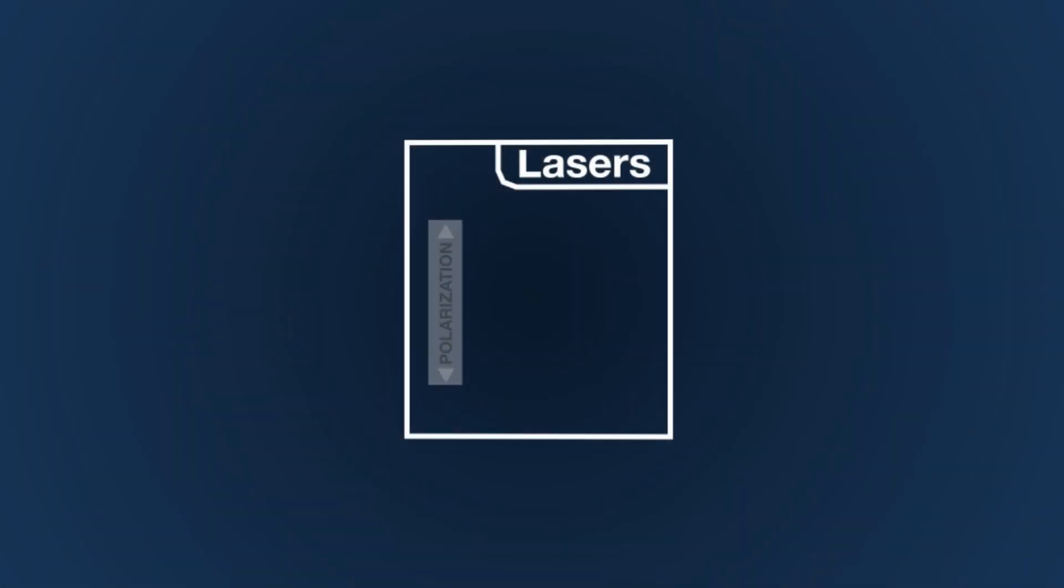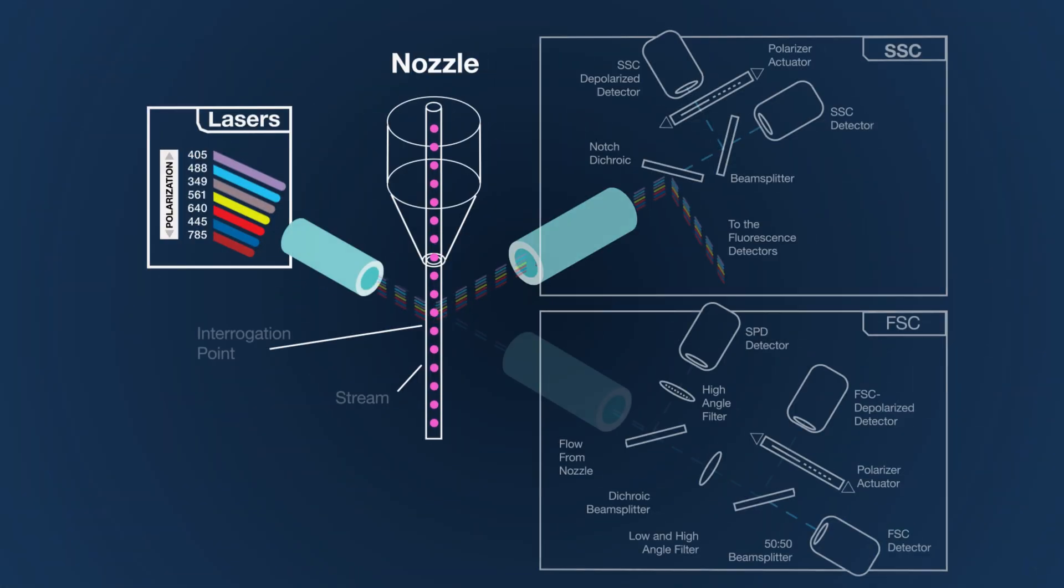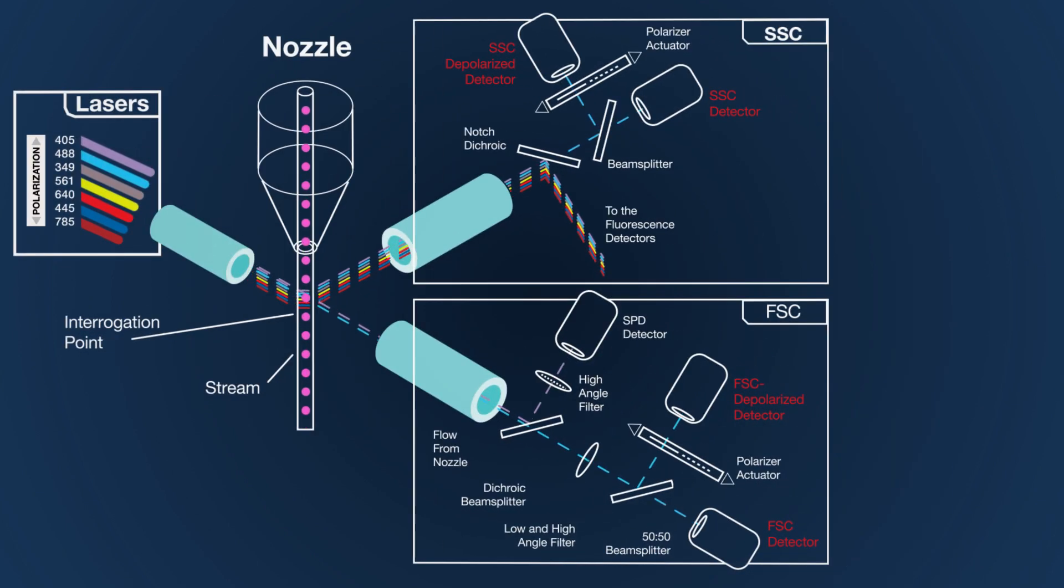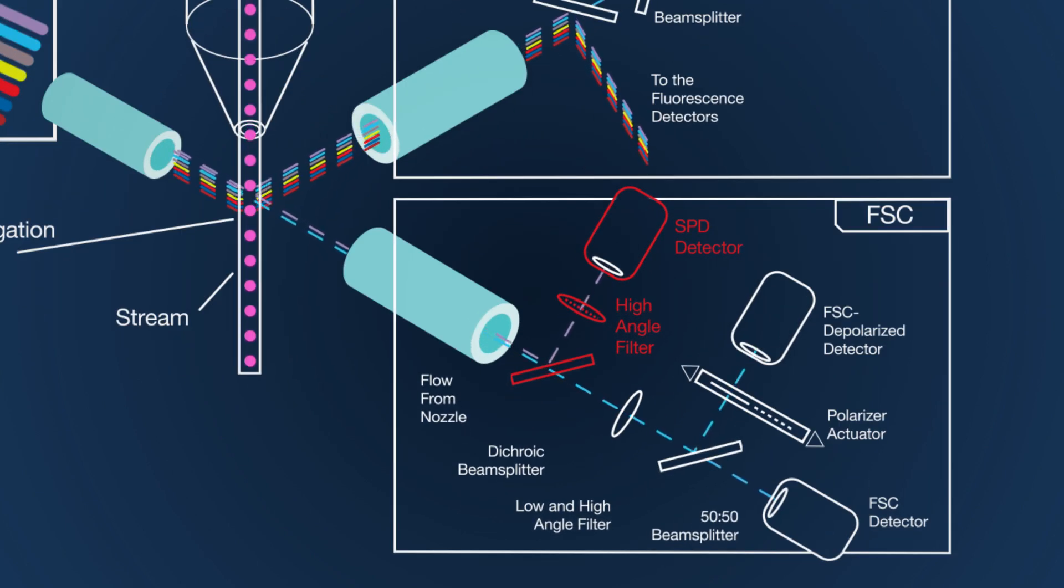Multiple scatter options offer greater flexibility with 488 nanometer forward scatter and side scatter, polarized 488 nanometer forward scatter and side scatter, and small particle detection with a dedicated 405 nanometer forward scatter.